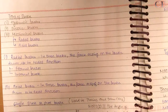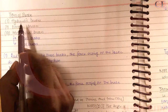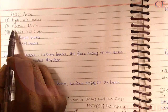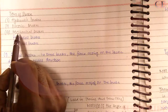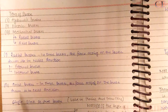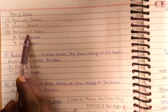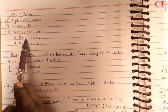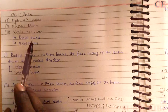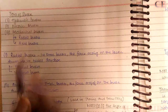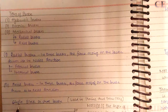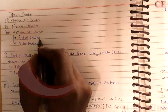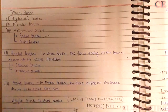First, let's see the different types of brakes. Hydraulic brake is the first type, the second is electric brake, and the third is mechanical brakes. Mechanical brakes are further classified into two parts: radial brakes and axial brakes. Single block or shoe brake is a type of radial brake.